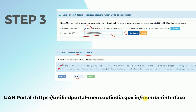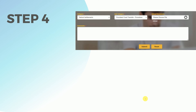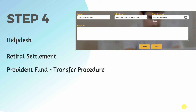From here you will get Form 13, and you have to take a screenshot of that transfer request. Then visit the alumni portal again, go to Help Desk, then Retireal Settlement, and then Provident Fund Transfer Process. Just after clicking Help Desk, you will get the relevant options. From the drop-down menu select Retireal Settlement, and then select the sub-category Provident Fund Transfer Process.